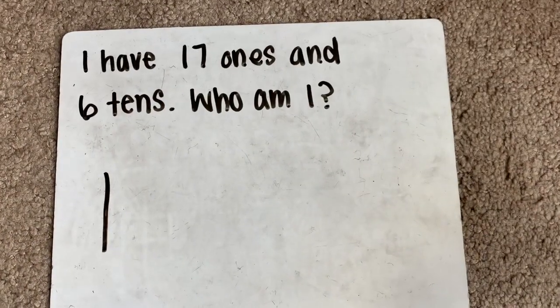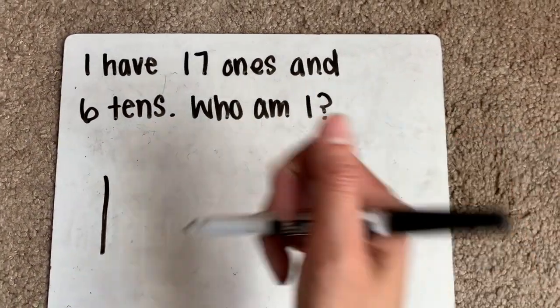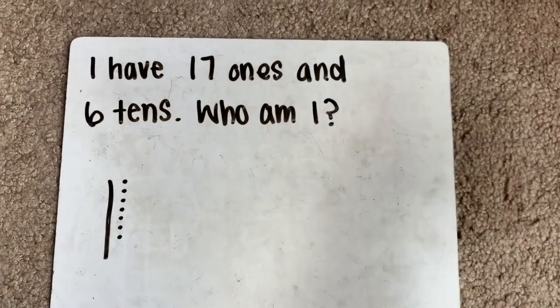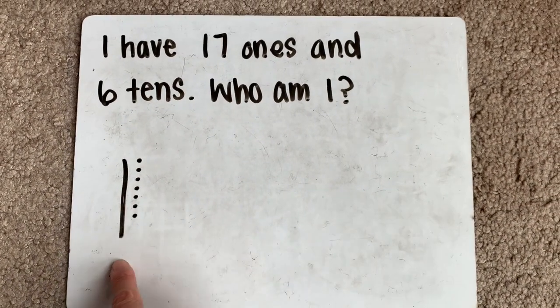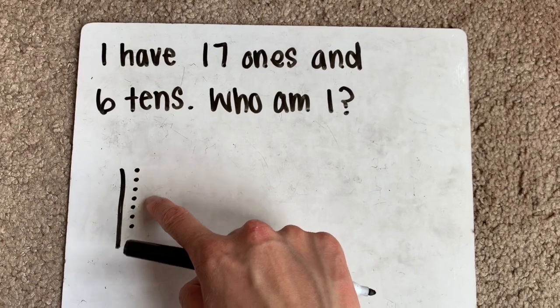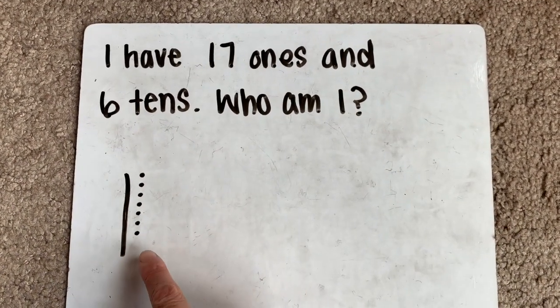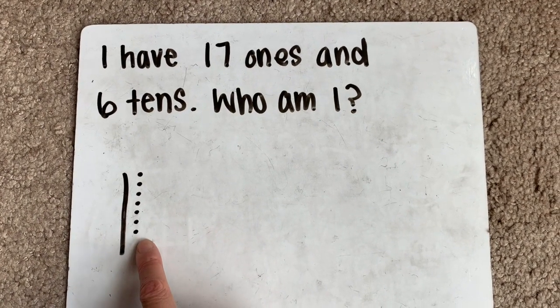17 has one 10. And for my ones, I'm going to draw dots. 1, 2, 3, 4, 5, 6, 7. So remember, a stick means 10 and each dot is the same as a cube. So we have 17 ones, which is the same as 1 ten and 7 ones.